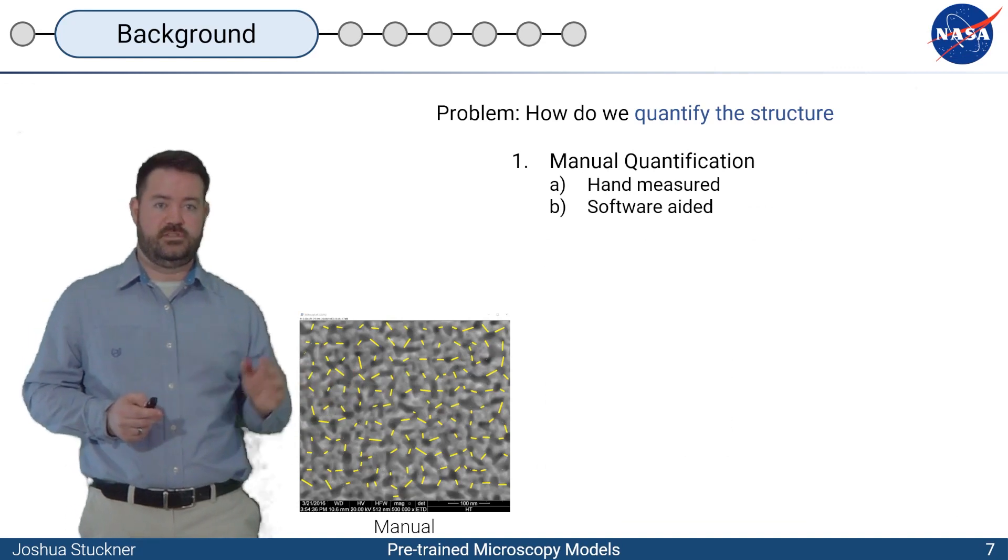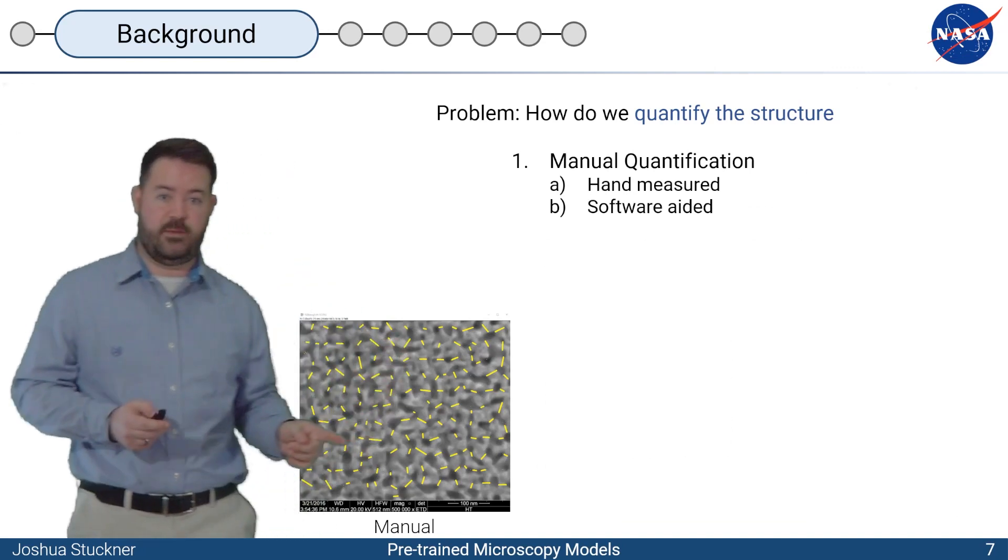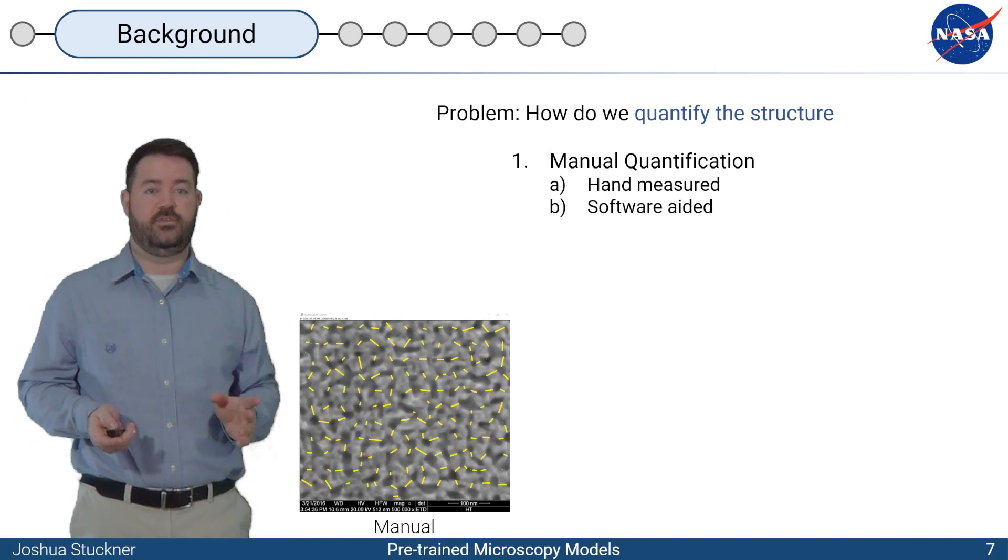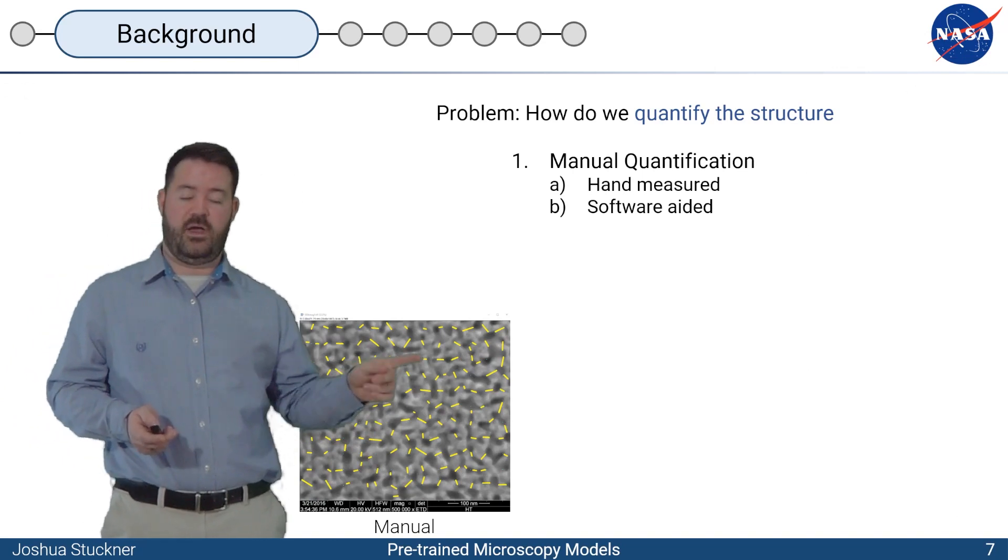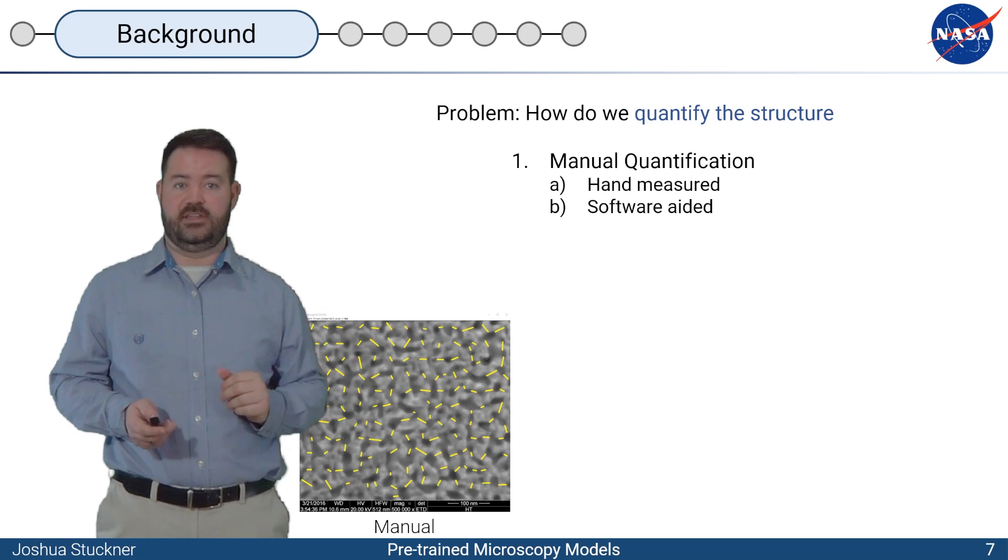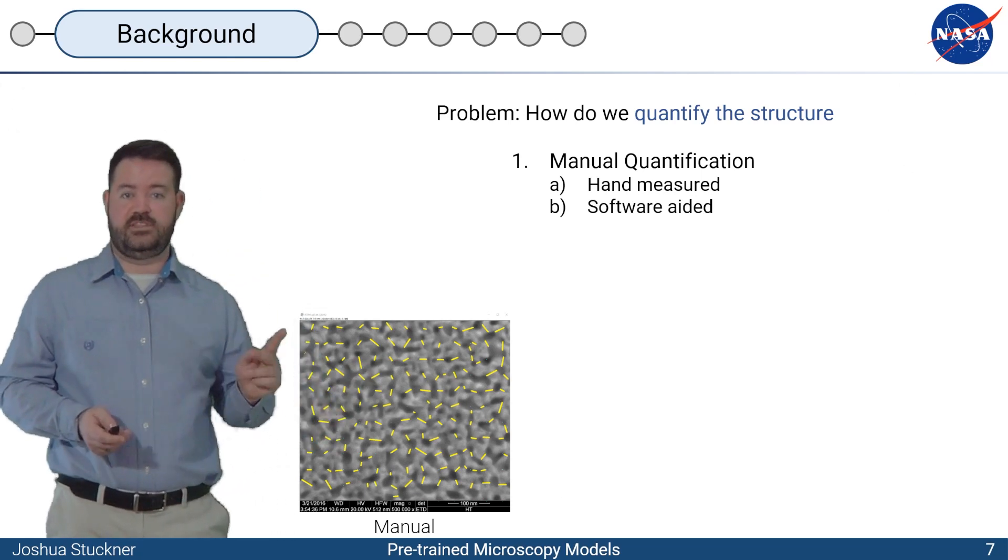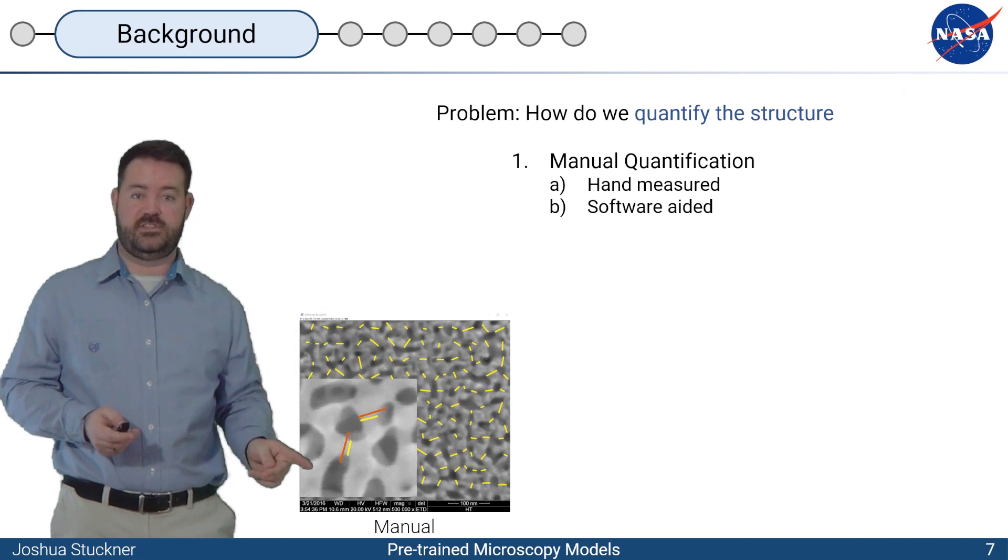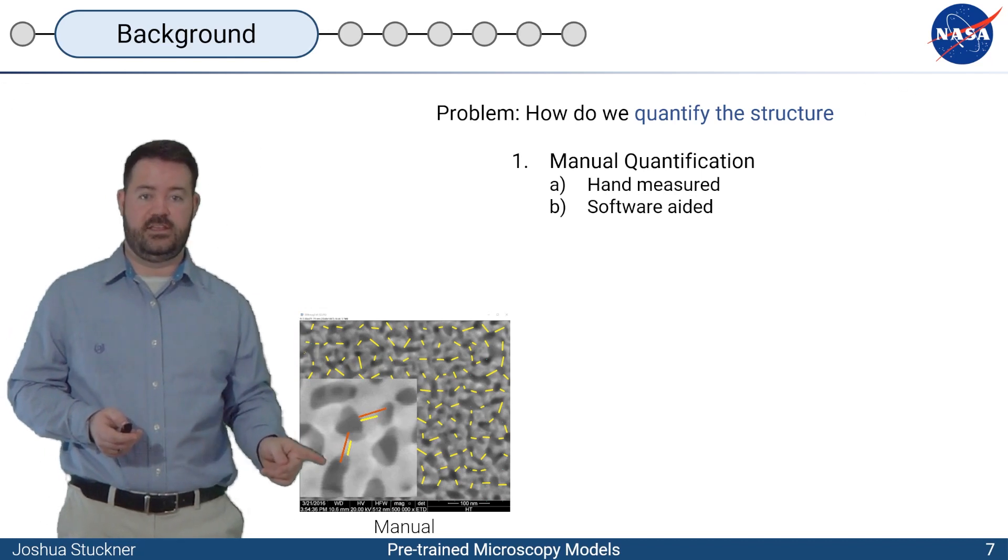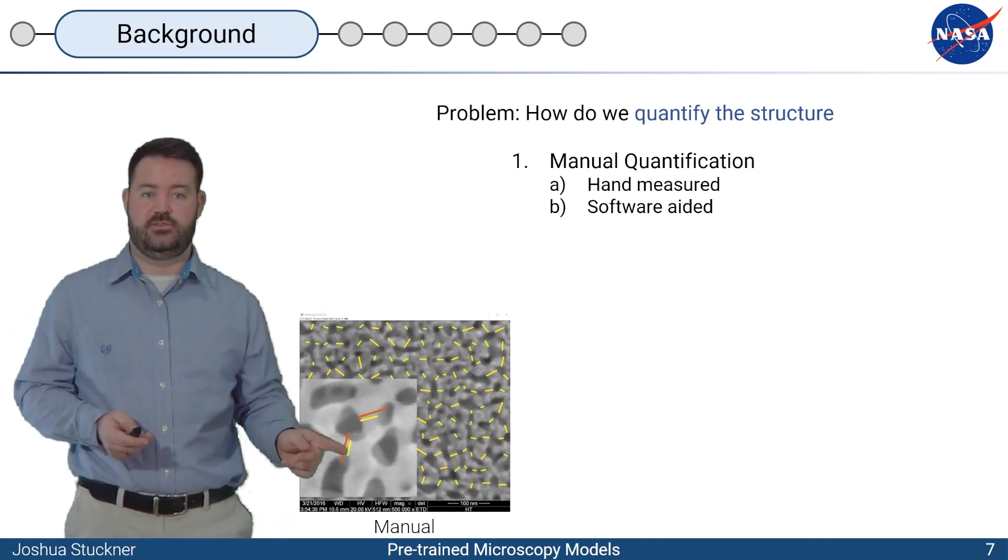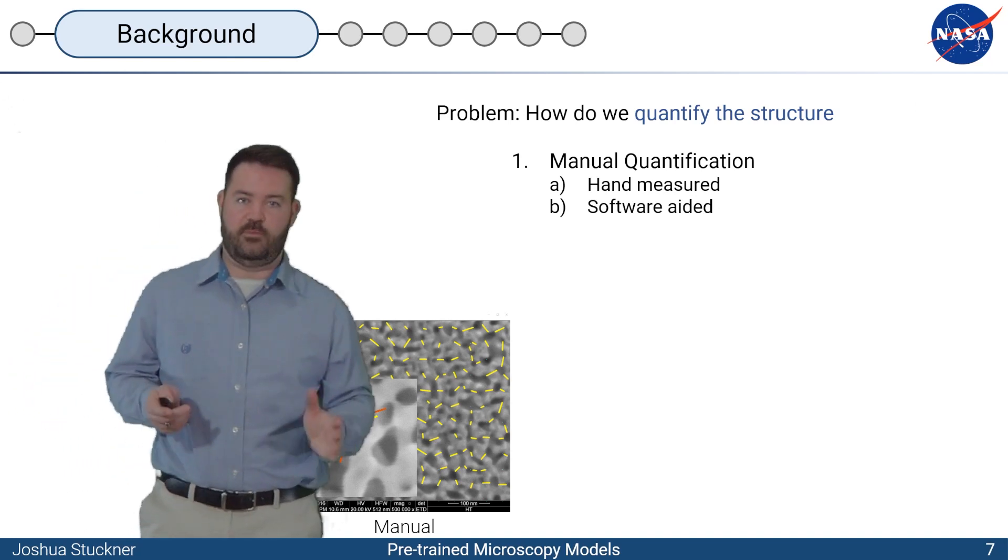Traditionally we might have used manual measurements maybe with hand measurements or software assisted with programs like ImageJ. But this is extremely tedious and time-consuming. And there's a lot of potential for bias where one researcher might think it's the orange line here and another researcher thinks it's the yellow line. It's not very repeatable.